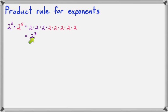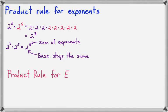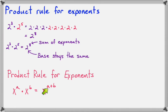Notice that the base stayed the same, and the new exponent is the sum of the two previous exponents — and that is the product rule. The base stays the same and the exponent is the sum. So in general terms, here is the product rule for exponents: x to the a times x to the b equals x to the a plus b. This is showing you that the base stays the same, and the exponent is the sum of the two previous exponents.